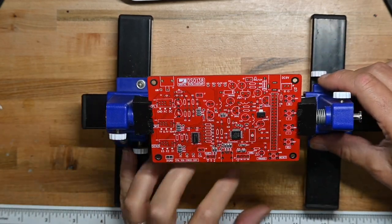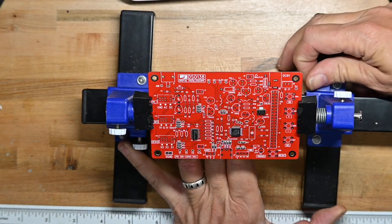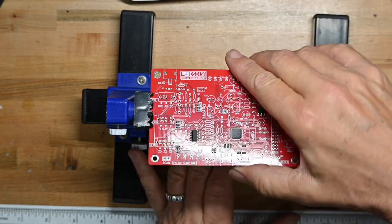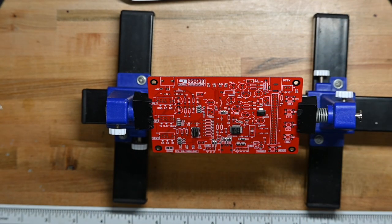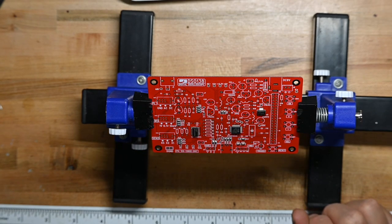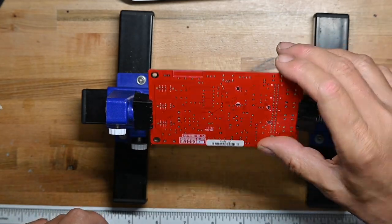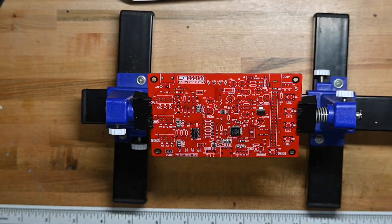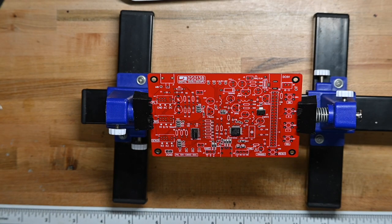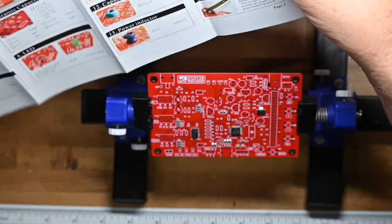Two other things about the circuit board itself. It does not have the component values silkscreened on it, which is not great, but it does have through-hole plating, which is great. So halfway good. So that just means you have to keep the build guide around to know which goes where.